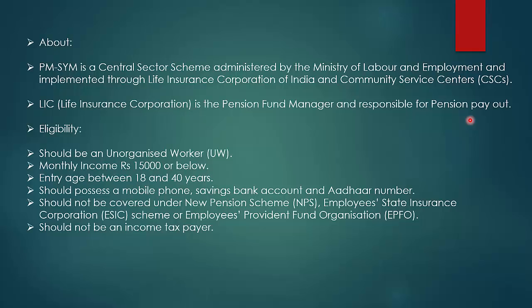What is the eligibility? The person must be an unorganized worker with a monthly income of Rs. 15,000 or below. Entry age is between 18 and 40 years. The person should possess a mobile phone, a savings bank account, and an Aadhaar number to avoid duplication. They should not be covered under the New Pension Scheme, Employees' State Insurance Corporation scheme, or Employees' Provident Fund Organization.